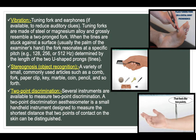For stereognosis (object recognition), a variety of small, commonly used articles such as a comb, fork, paper clip, key, marble, coin or pencil are used. For two-point discrimination, a two-point discrimination esthesiometer is a small handheld instrument designed to measure the shortest distance that two points of contact on the skin can be distinguished. Pictures illustrating the equipment for vibration, stereognosis and two-point discrimination testing are shown.